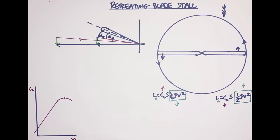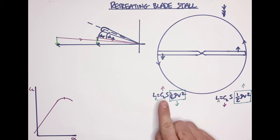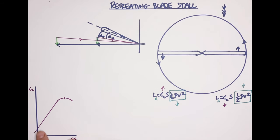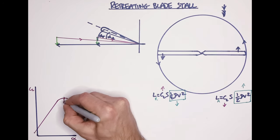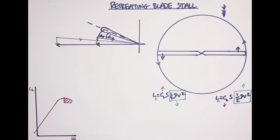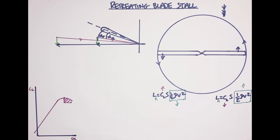As we go faster, the dynamic pressure on the retreating side comes further and further down, so to balance the lift we have to increase the coefficient of lift more and more, increasing the angle of attack more and more. As we move up the angle of attack we move up the coefficient of lift curve until eventually we hit the critical angle of attack. As soon as we do that we fall off the other side and start to stall the blade - and this is exactly what happens when we get retreating blade stall. It essentially happens because we continually have to increase the pitch on the retreating blade until we reach the critical angle of attack at the tip.